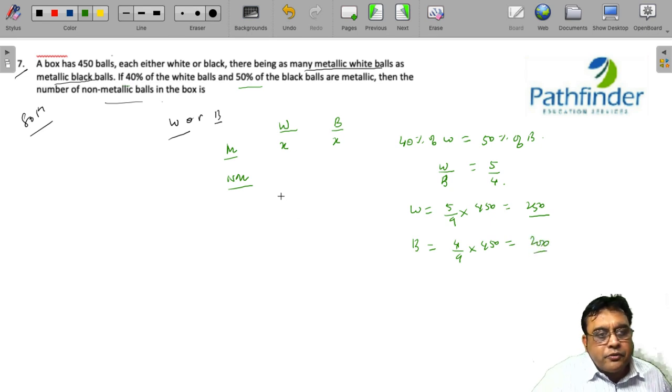Total white balls: 250. Total black balls: 200. We know that 40 percent of white balls, which is 100, are metallic. So the number of non-metallic white balls will be 250 minus 100, which equals 150.